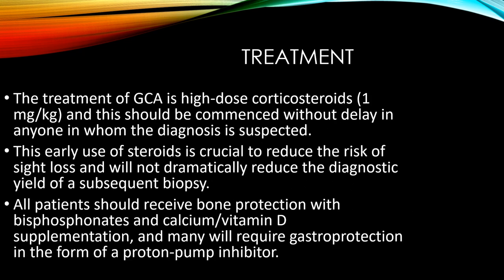The treatment of GCA is high-dose steroid at 1 mg/kg, and this should be commenced without delay in anyone in whom the diagnosis is suspected. Even before the diagnosis is confirmed, treatment should be started because complications such as blindness and GIT infarction may not wait for the complete diagnostic picture or biopsy results. The early use of steroid is crucial to reduce the risk of sight loss and will not dramatically reduce the diagnostic yield of subsequent biopsy. All patients should receive bone protection with bisphosphonate, calcium, or vitamin D supplementation, and many will require gastroprotection in the form of proton pump inhibitors.